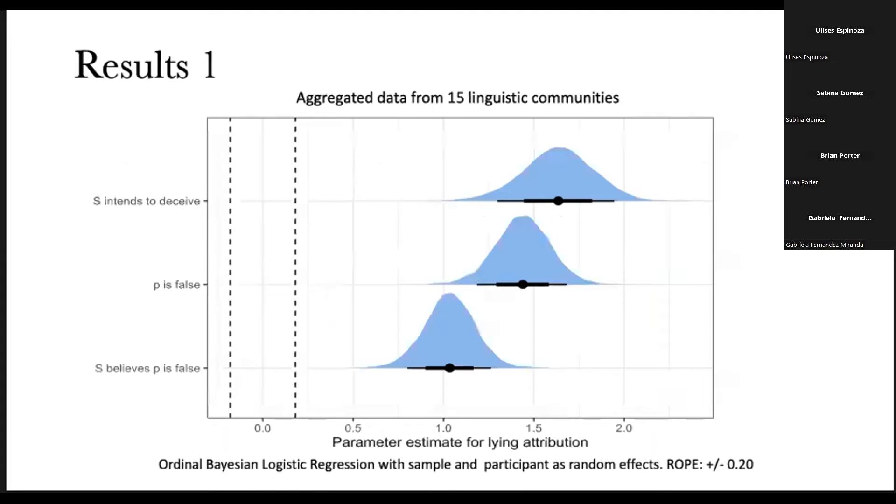Let's look at the results. The first results show here the aggregated data from 15 linguistic communities. So we ran an ordinal Bayesian logistic regression. Basically, we treat each of these dimensions as a binary variable as they are ones and zeros. And here you can see that the three components turn to be relevant for the prototype.